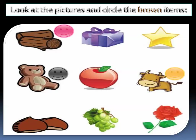What about the apple — is it brown? No, it's red. And the goat — the goat is brown too. Excellent. And the nuts are brown. Did you circle the nuts? Very good. And the grapes — are the grapes brown? No. The flower — is the flower brown? No.